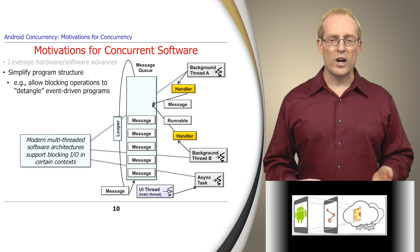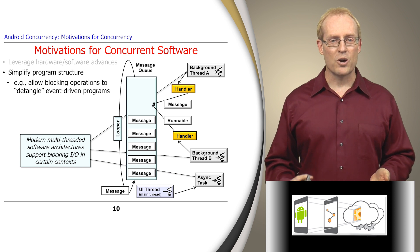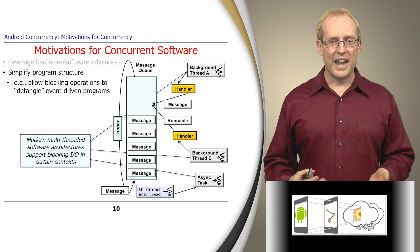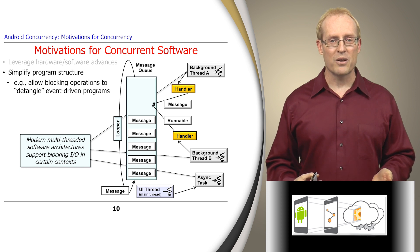Now that modern middleware, operating systems, and hardware have better concurrency support, more effective ways of structuring application and system software have emerged. For example, Android enables multiple threads to perform long-running computations in the background, which maps efficiently onto multiple cores.